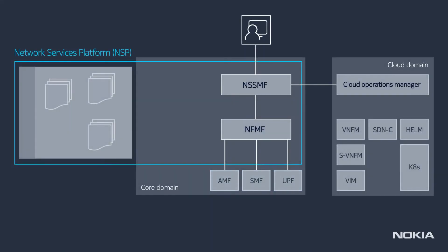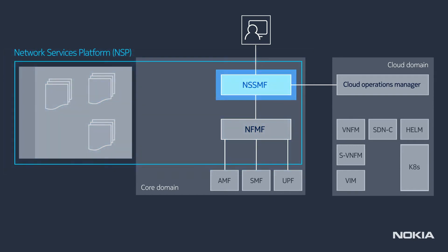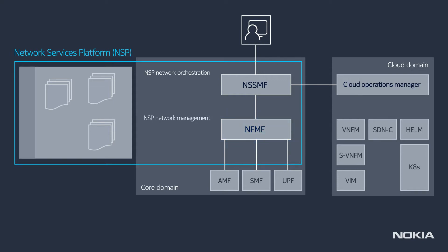To create these core network slices, the NSP acts as a Network Slice Subnet Management Function for the orchestrated deployment of the core network functions and the data center networks that connect those functions, and for triggering the core slice configuration, and as a Network Function Management Function for the configuration and monitoring of the core network functions. Those NSP components are fully compliant with 3GPP Release 16.